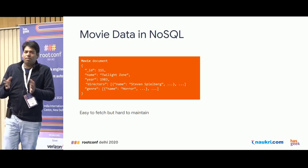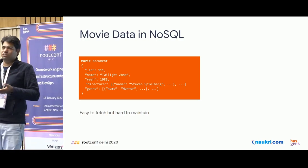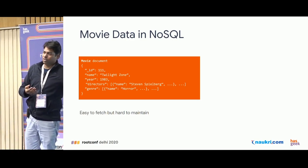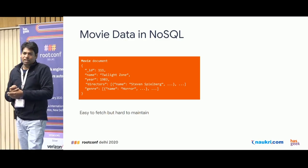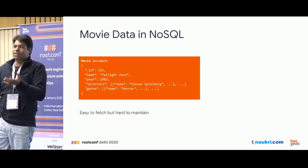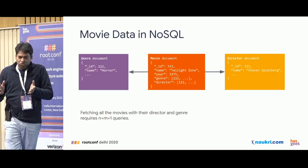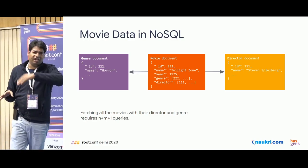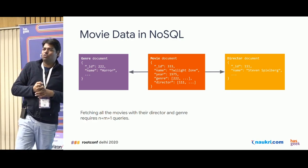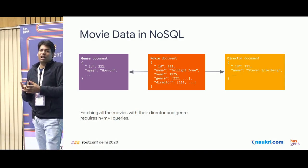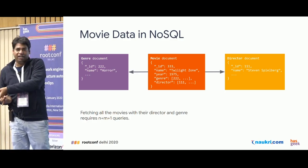Let's do the same thing in NoSQL. A movie document would contain movie information, director information, and genre information all together. This seems interesting when you only need to fetch data. But if a director's information is updated, you have to find that director across all movies and update it everywhere — that's very hard to maintain. If you split it into separate collections and keep IDs, you cannot join them, so you end up running N plus M plus 1 queries internally — where N is the number of genres and M is the number of directors — just to get one movie.